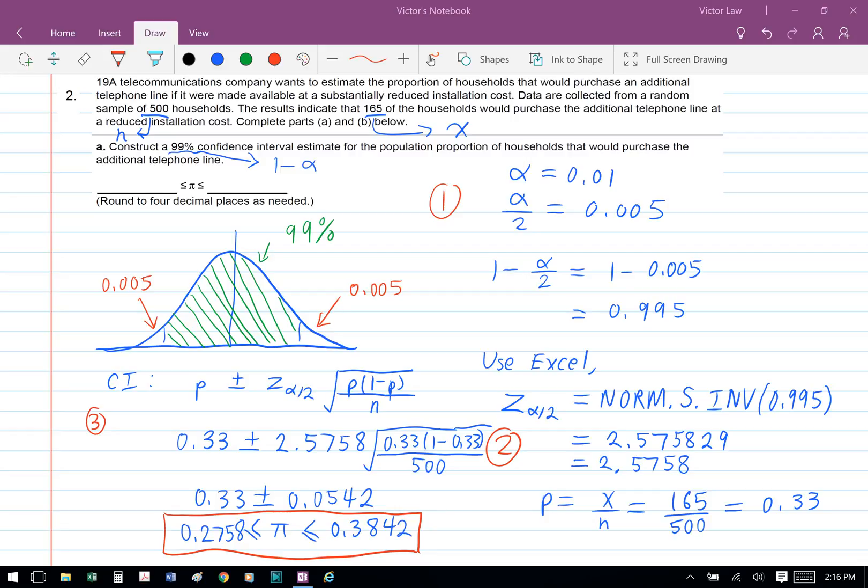And we get 0.33 plus minus 0.0542, so our proportion is between 0.2758 and 0.3842.